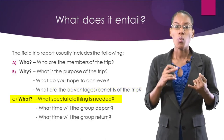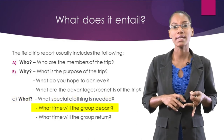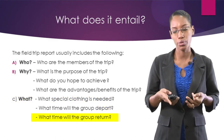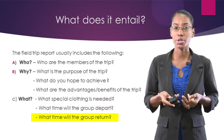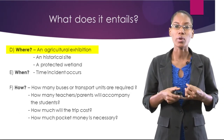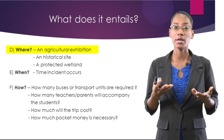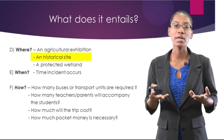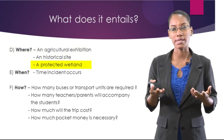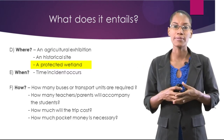C — what special clothing is needed? What time will the group depart? What time will the group return? D — where, where is it going to take place? It can take place at an agricultural site, a historical site, or a protected wetland. Those are some examples of where it might take place.